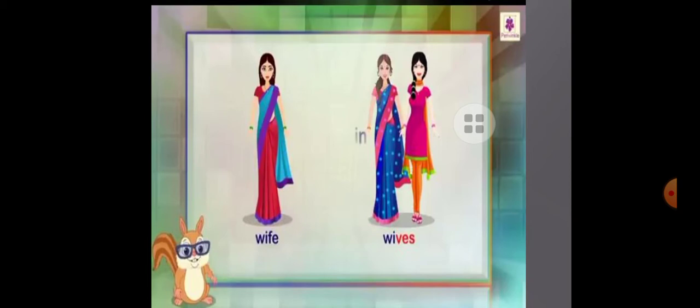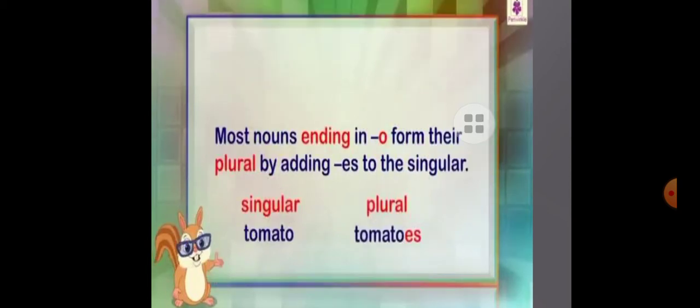Like leaves and knives. Wife — the plural is wives. And most nouns ending in -o form their plural by adding -es. For example, tomato becomes tomatoes, potato becomes potatoes.